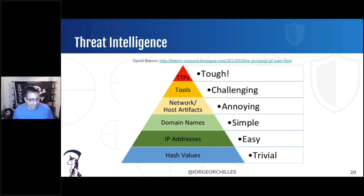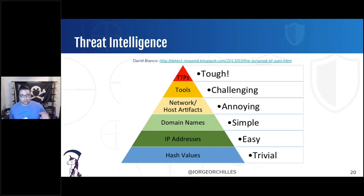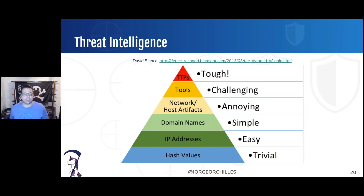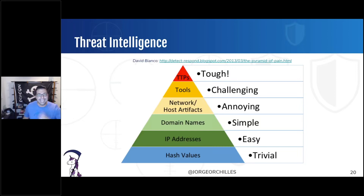David Bianco's Pyramid of Pain — we want to focus on TTPs: tactics, techniques, and procedures. Everything else is important but easier to identify. Tools — we created the C2 Matrix, it's all about tools — yet we still don't want to focus too much on tools. Really the behaviors are the toughest thing to catch and the hardest for adversaries to change. If you flip this pyramid, it's also a pyramid of pain for the red team: behaviors are hardest to change; tools, domains, IPs, and hashes are easy to swap.